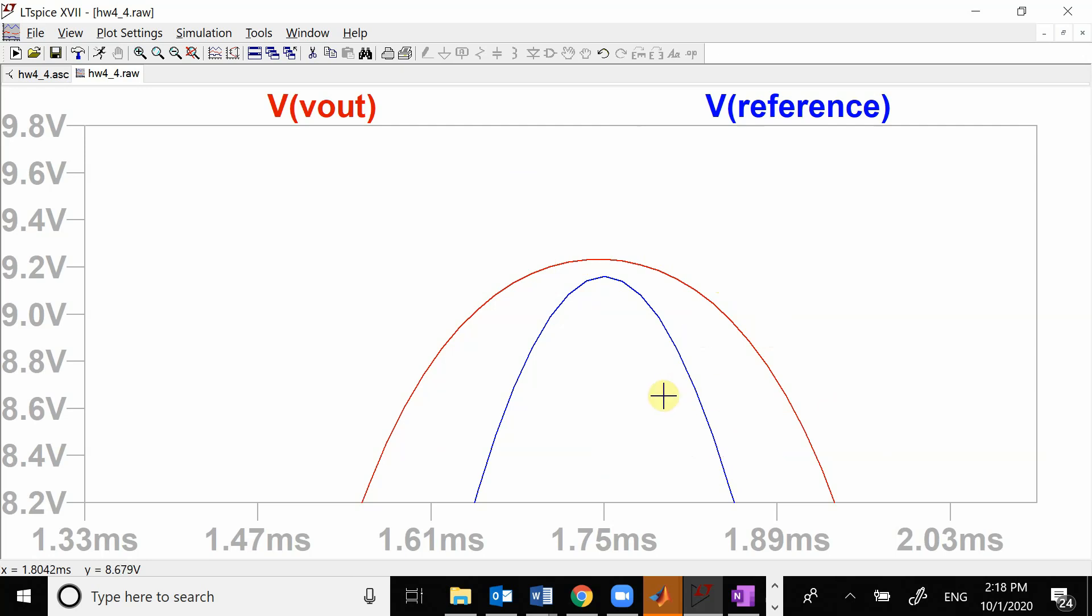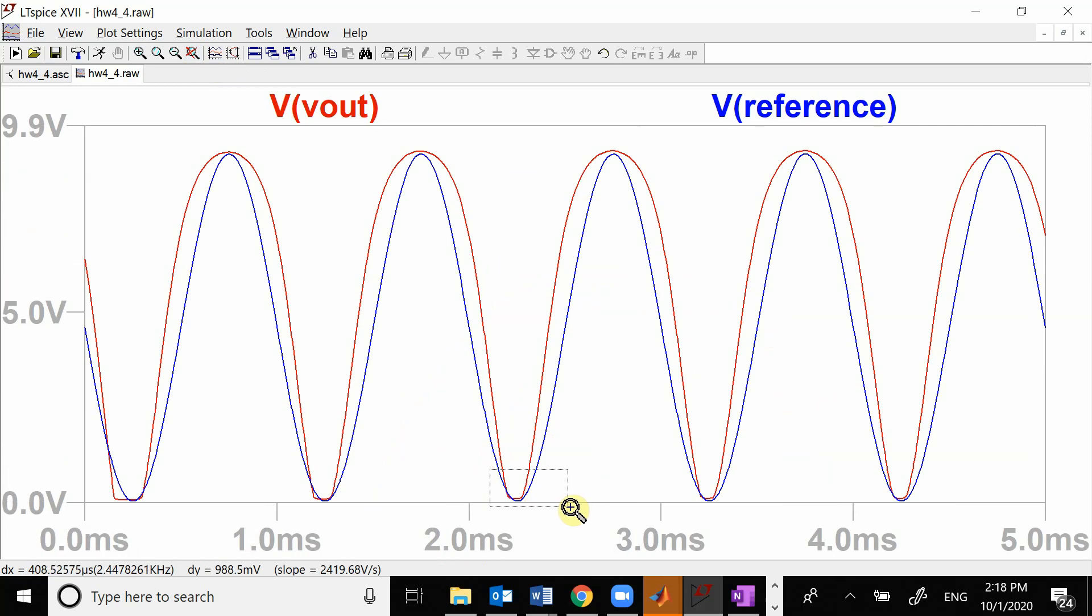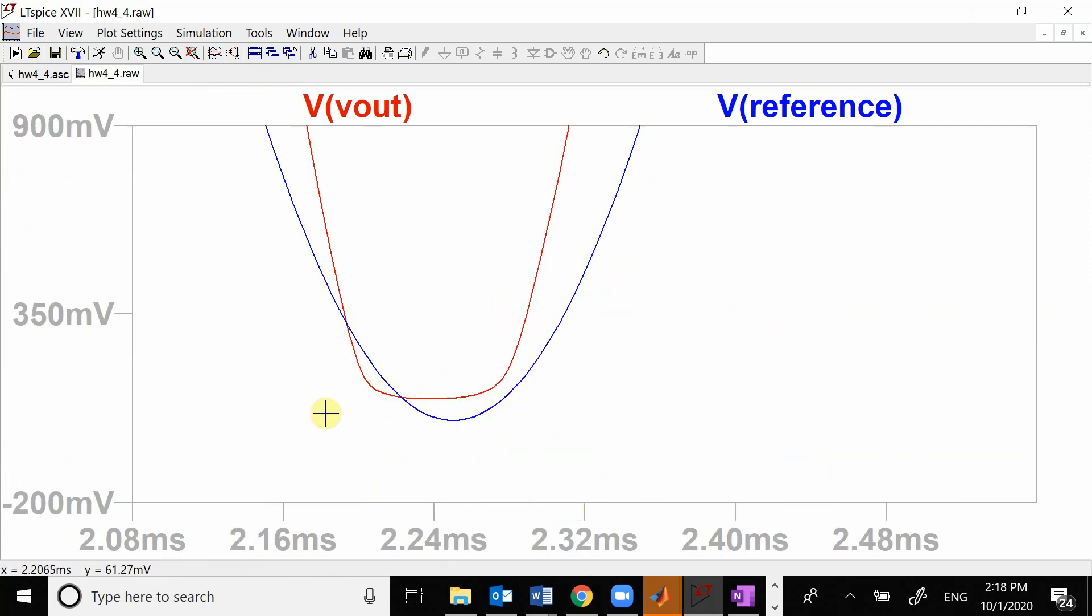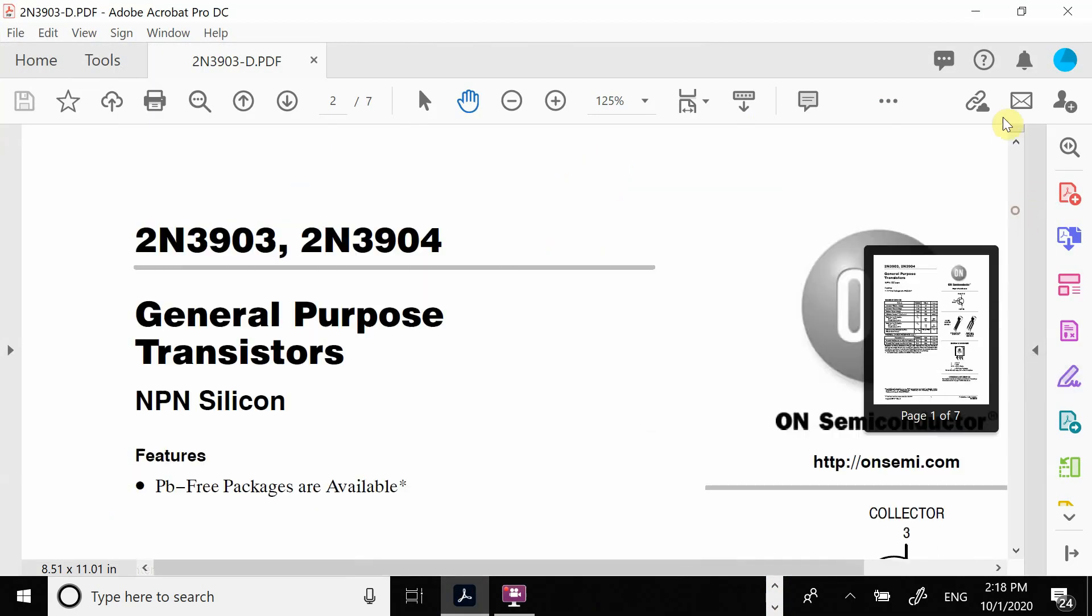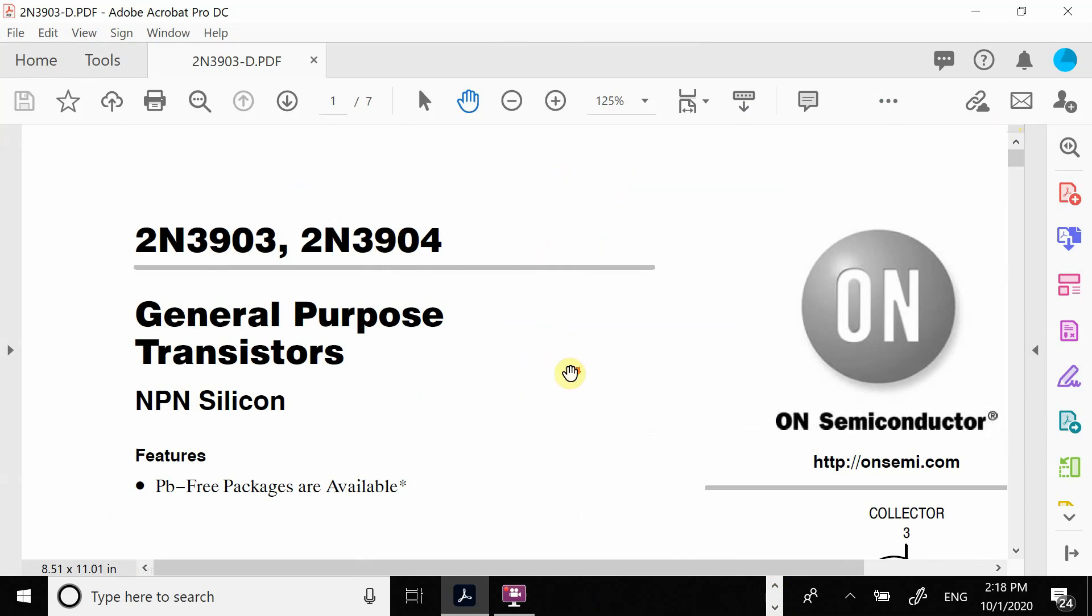So let's look at what we want our clipping to be. Let's start with the bottom since the bottom is a little bit easier because it tends to be this flat section right here. So we're going to go to our datasheet for the 2N3904.